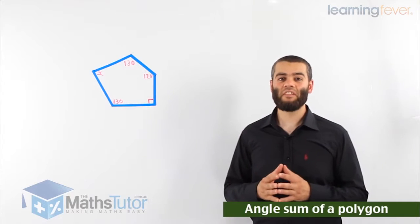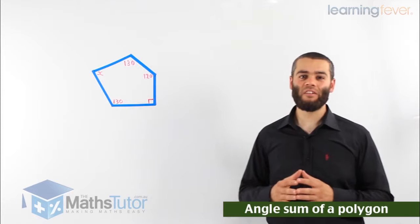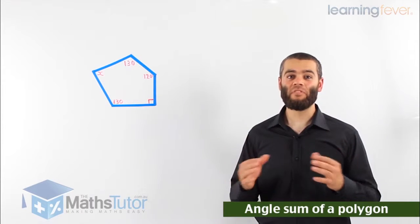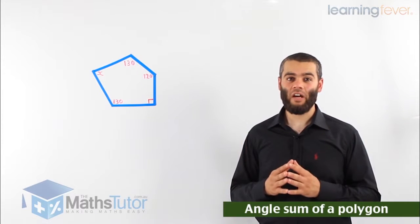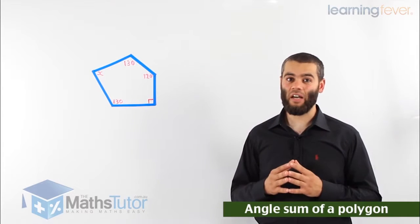Hey guys, in a previous lesson we looked at the angle sum of polygons, and in particular regular polygons, and we mentioned that regular polygons are shapes that have the same sides in length and the same angles in terms of size.